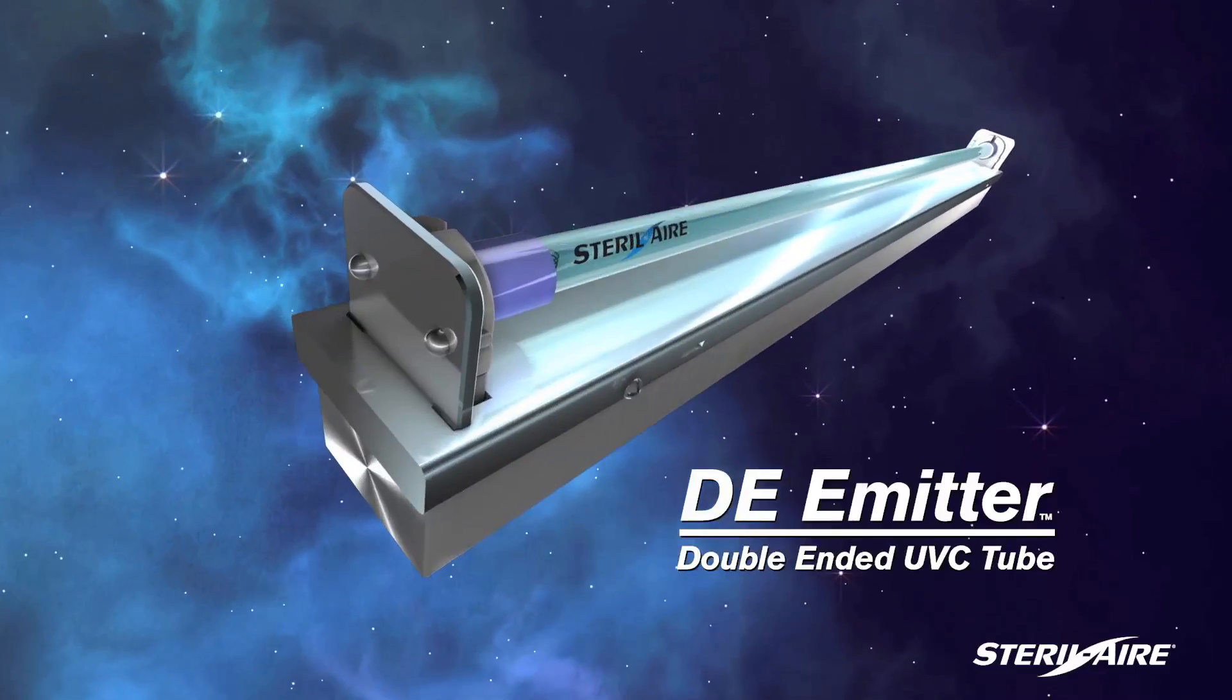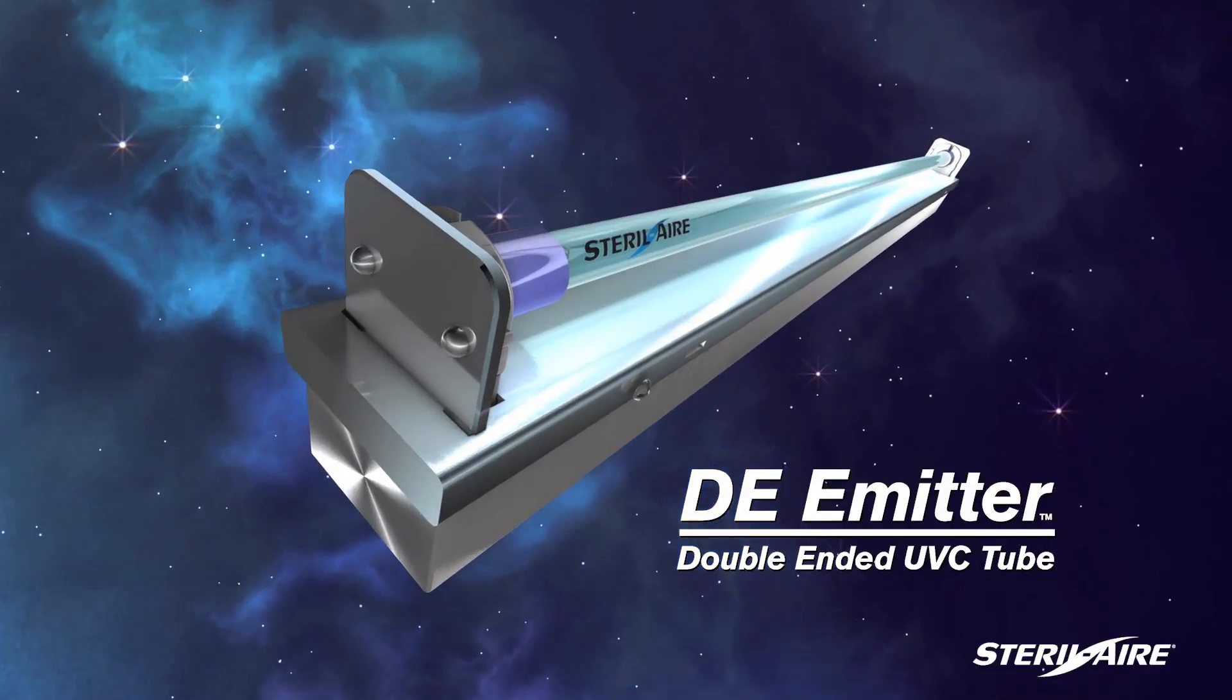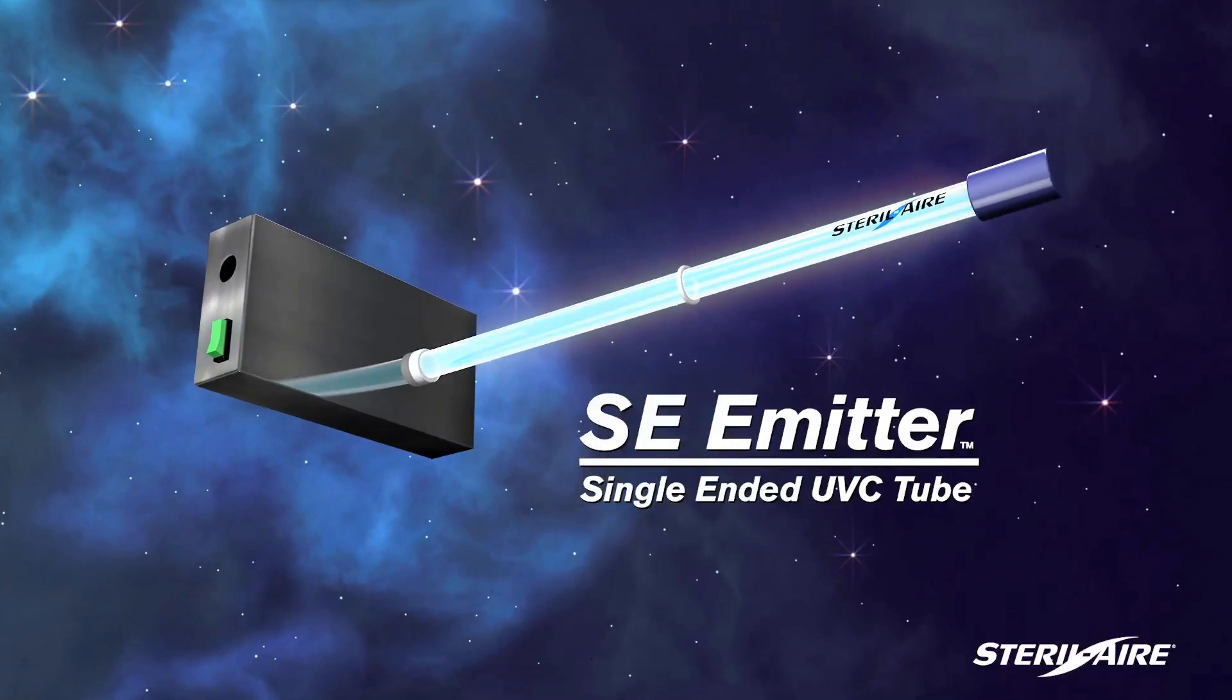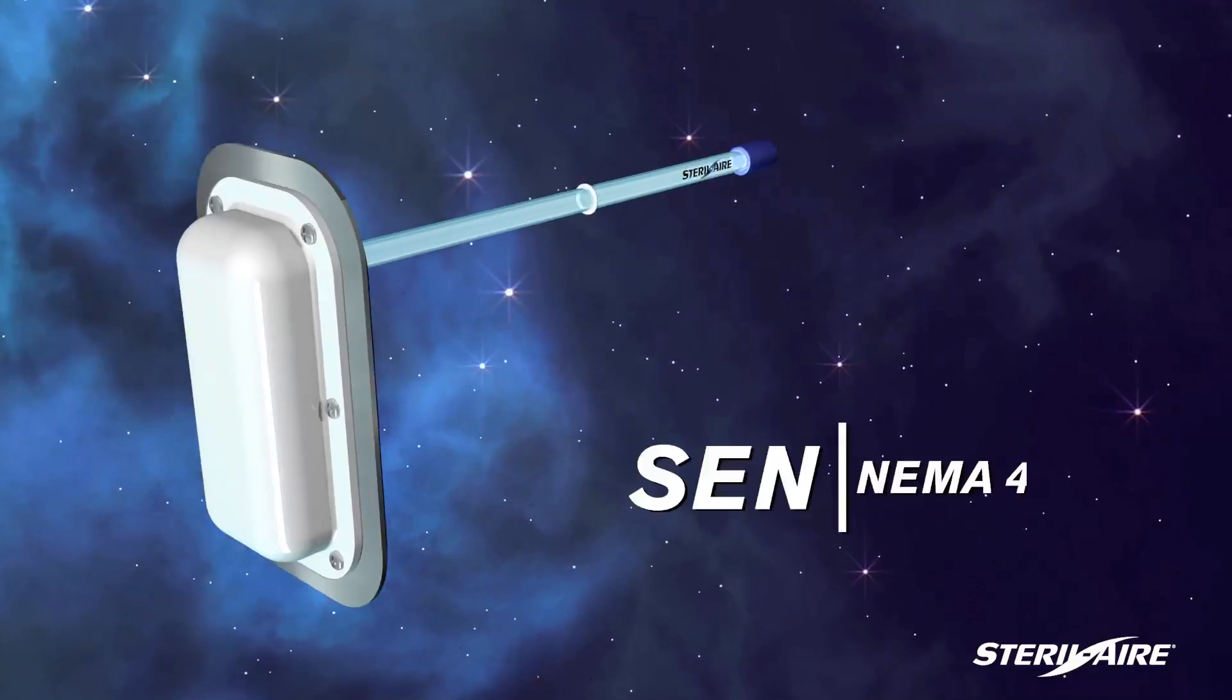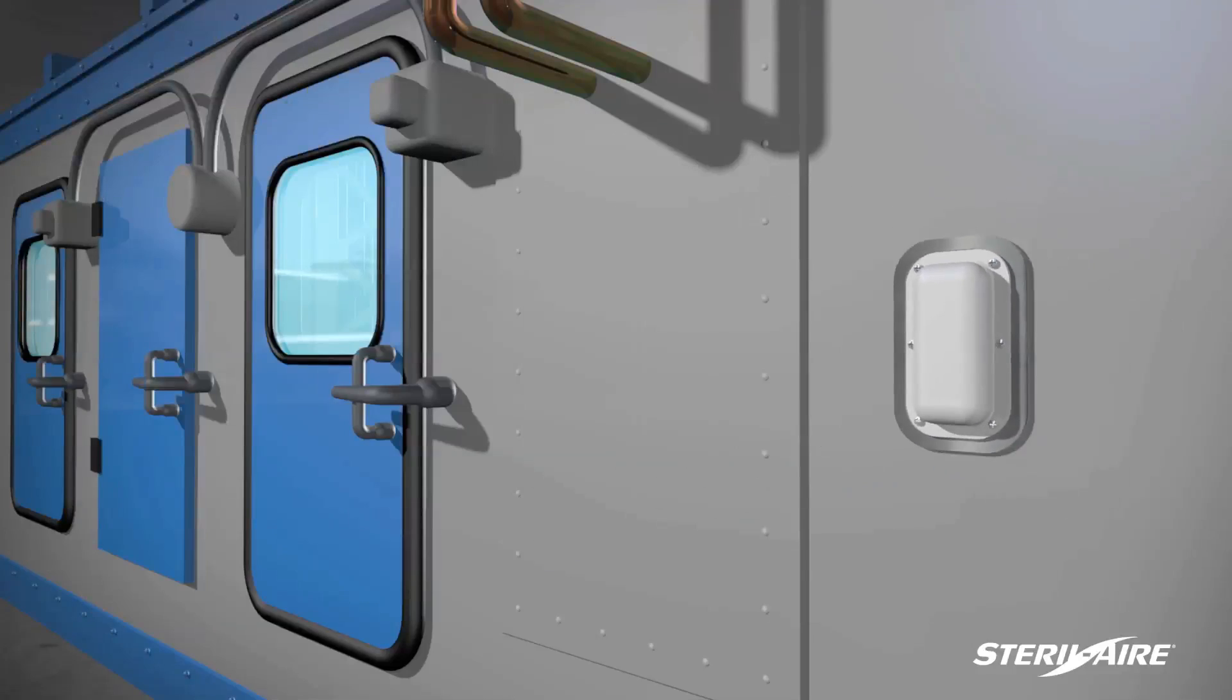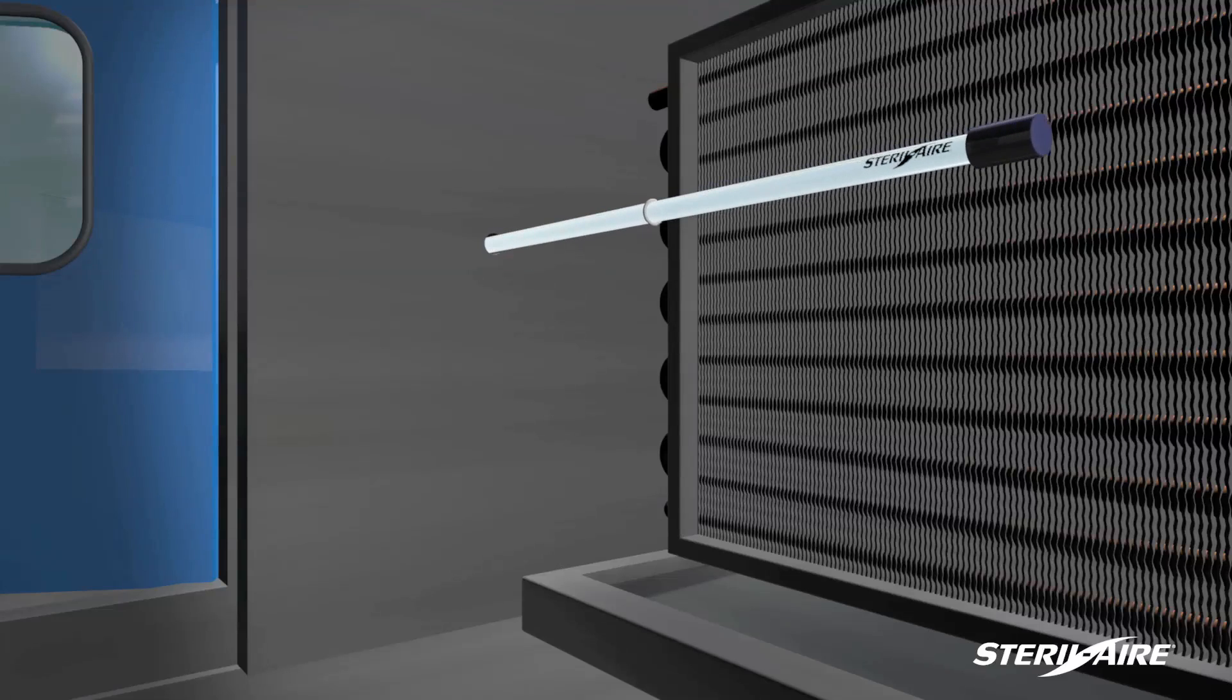Sterile Air's double-ended EE systems are installed inside large to medium-sized AHUs. The SE single-ended and SEN NEMA 4 units are installed from the outside of the AHU through a hole drilled in the AHU wall.